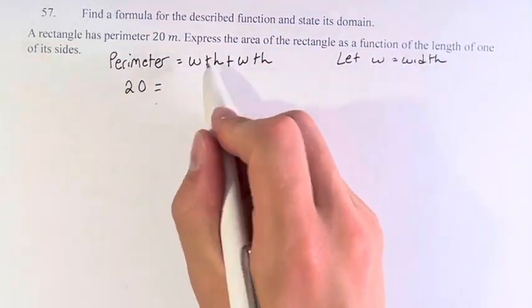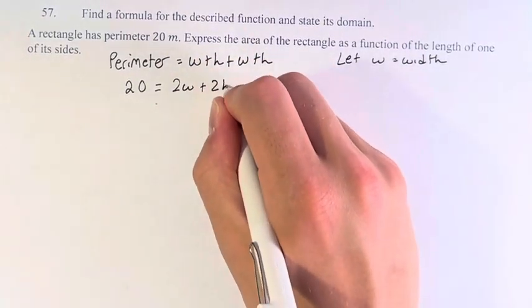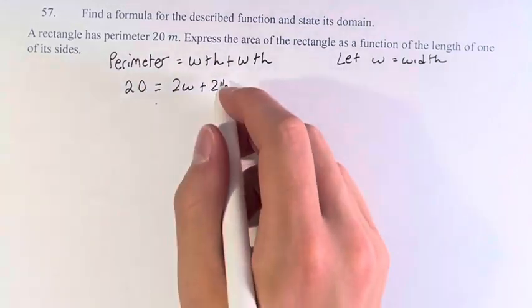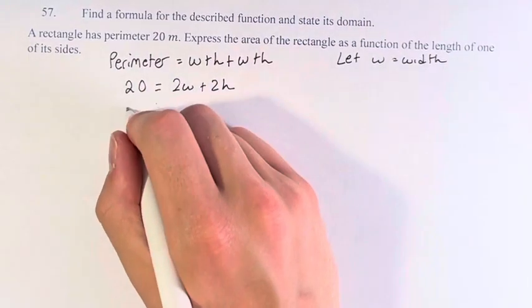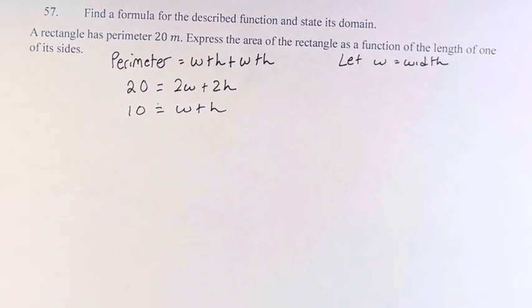20 is equal to 2w plus 2h. We can simplify this by dividing everything by 2. 10 is equal to w plus h. You can divide everything by 2, and the formula still stays exactly equal.